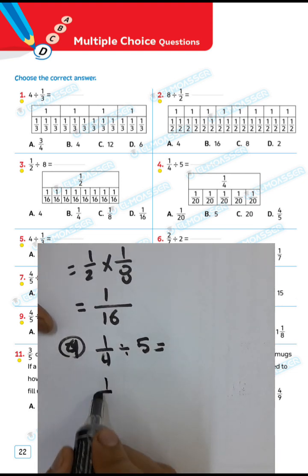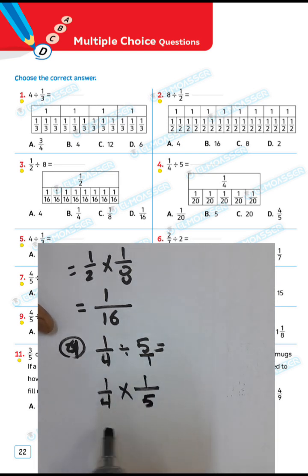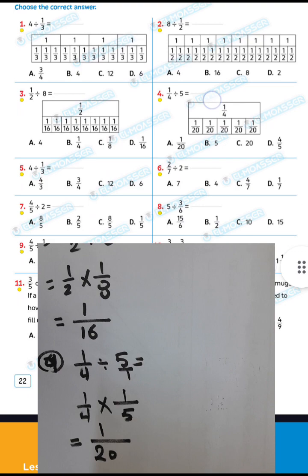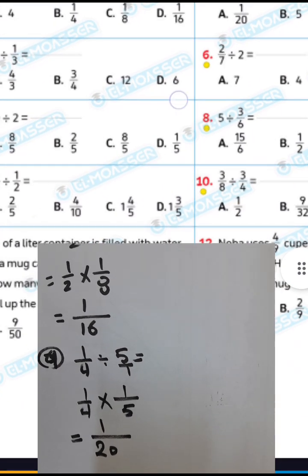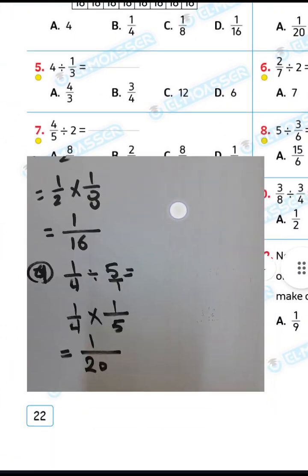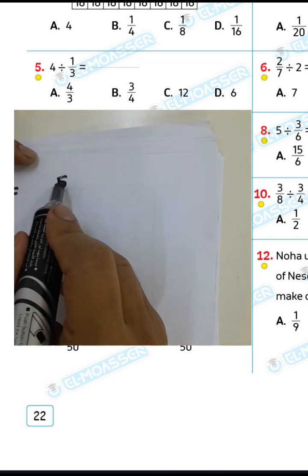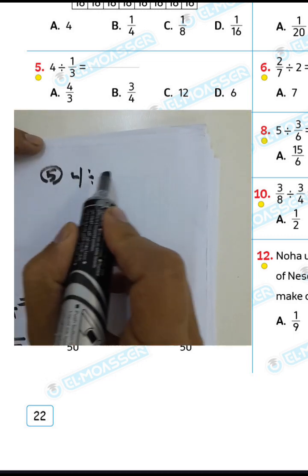Question number 4: 4/5 divided by 5. We can write 4/5 and convert from division to multiplication, then take the inverse of 1 over 5. The result will be 1 over 16.